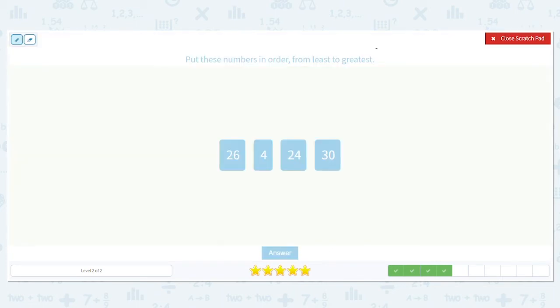Still going in order from least to greatest. 26, 24, 4, and 30. Which one is the lowest, the least, the youngest? Either one of those words can help you remember. 4 is the youngest. Then we have 26, 24, and 30. Well, I already know that 30 is the highest because my 20s are going to come before the 30s.